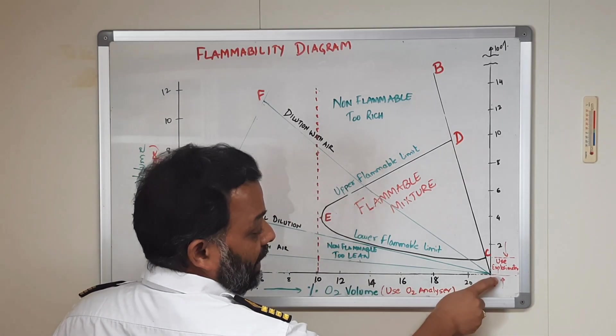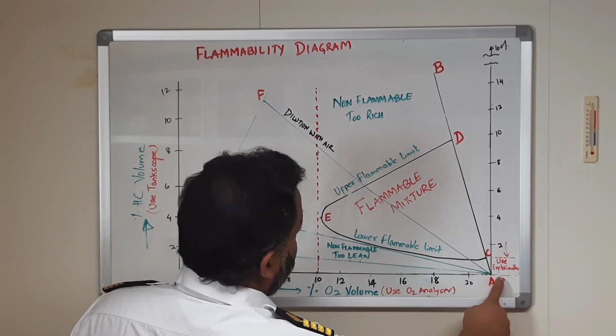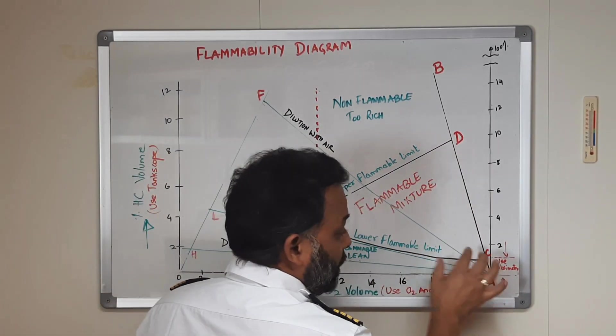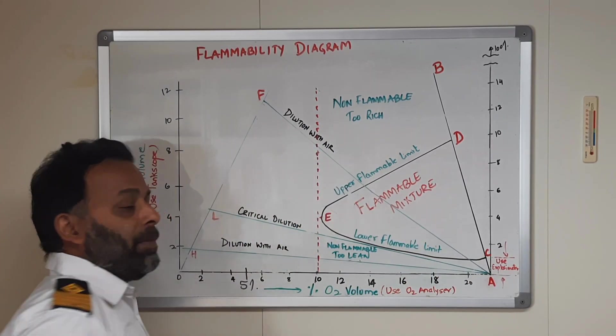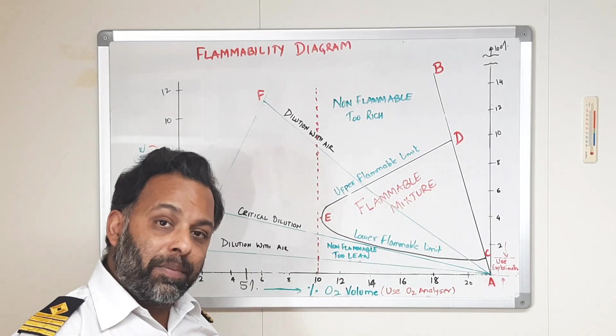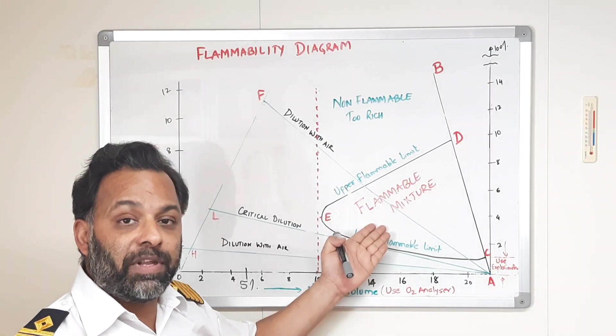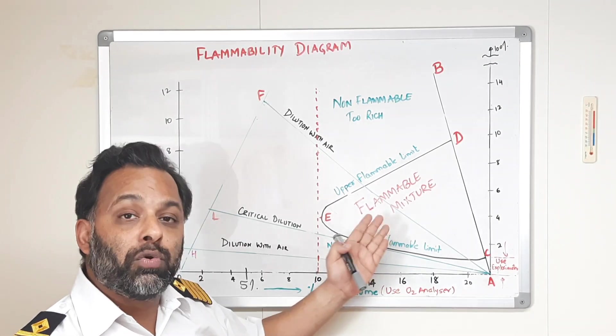Where ultimately it will reach to 20.9%, but it will pass through this flammable mixture region. See, here to here, it is passing through the flammable mixture region where the ratio of the hydrocarbons and oxygen is sufficient enough so that a fire can take place. So, this is hazardous area. This is what we do not want.